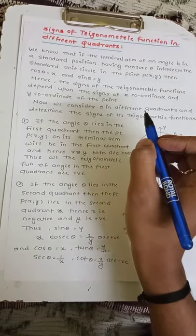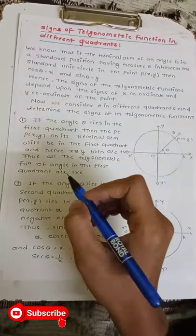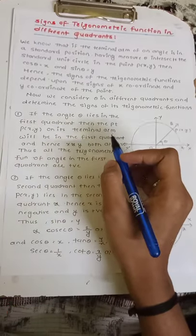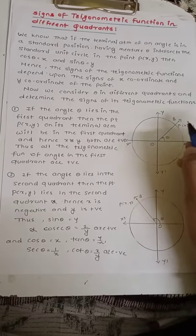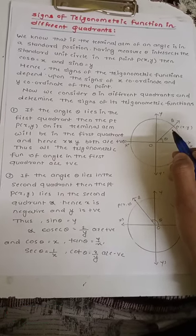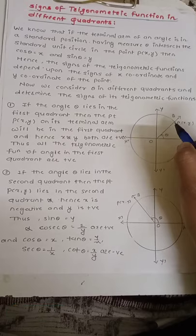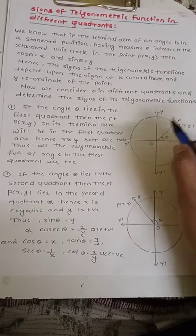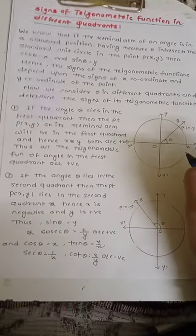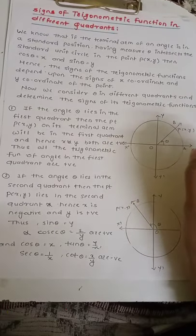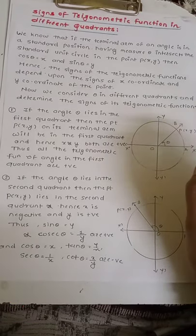In the first case, if the angle θ lies in the first quadrant, then the point P(x, y) on its terminal arm lies in the first quadrant, and hence x and y are both positive in the first quadrant. Thus all the trigonometric functions — sin θ, cos θ, tan θ, cosec θ, sec θ, and cot θ — are all positive.